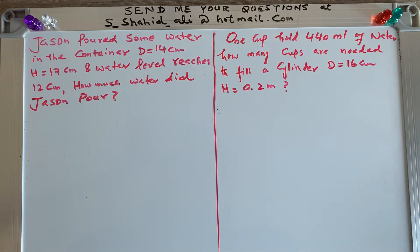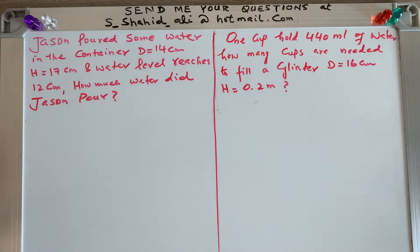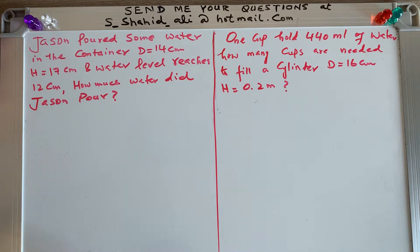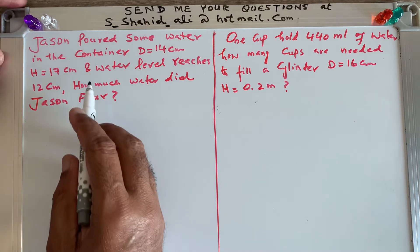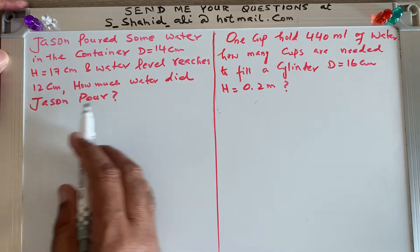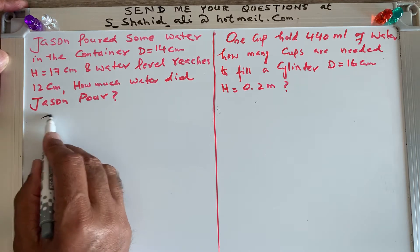Bismillahirrahmanirrahim, welcome to my channel 'Learn Math with Syed Ali.' Here we have two word problems. First question: Jason poured some water in a container whose diameter is 14 centimeters and height is 17 centimeters. The water level reaches to 12 centimeters. How much water did Jason pour?